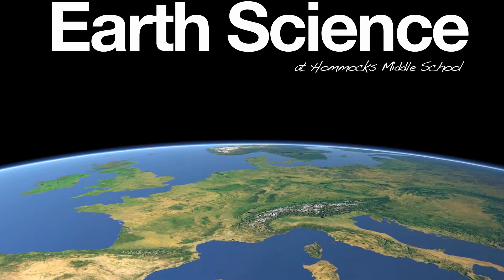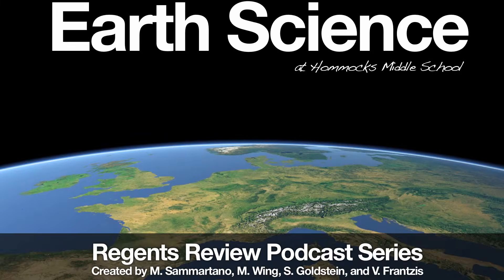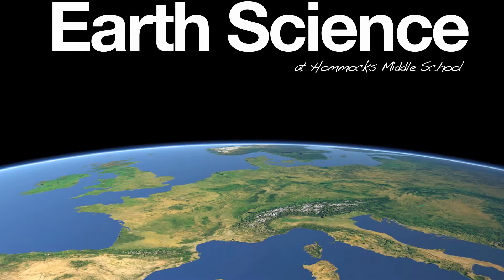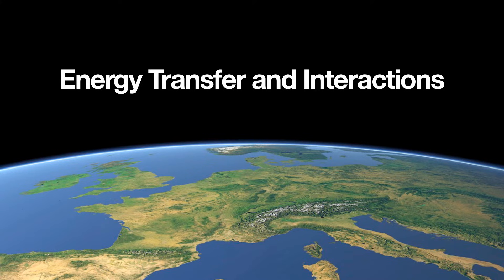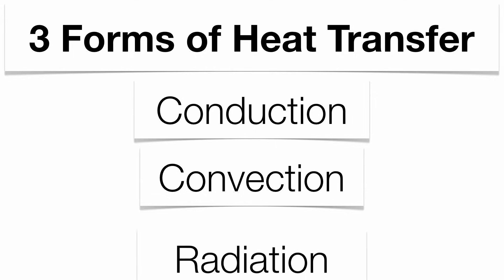Hi everyone, welcome to the Earth Science Region Review Podcast Series, created by Helmick's Middle School Earth Science Department. Today we're going to be talking about heat energy transfer through the Earth and the interactions that the Sun's energy has within the atmosphere. Let's start with the three ways energy is transferred within our planet: conduction, convection, and radiation.